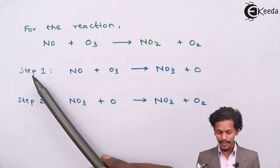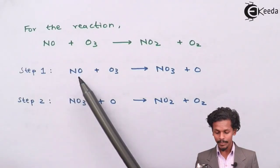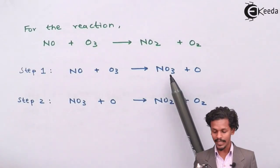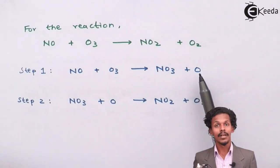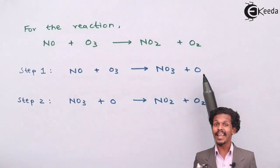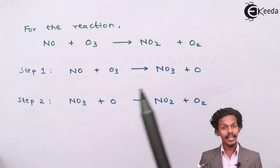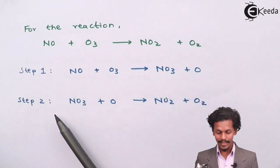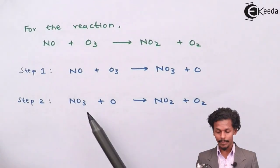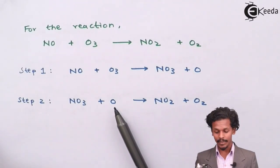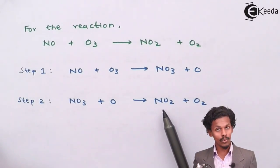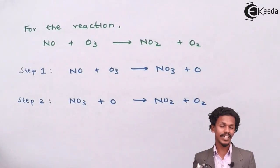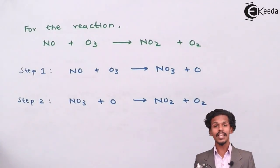Step one: nitrogen oxide plus ozone gives nitrogen trioxide (NO3) plus an oxygen atom. Step two: nitrogen trioxide plus oxygen atom gives NO2 plus O2.